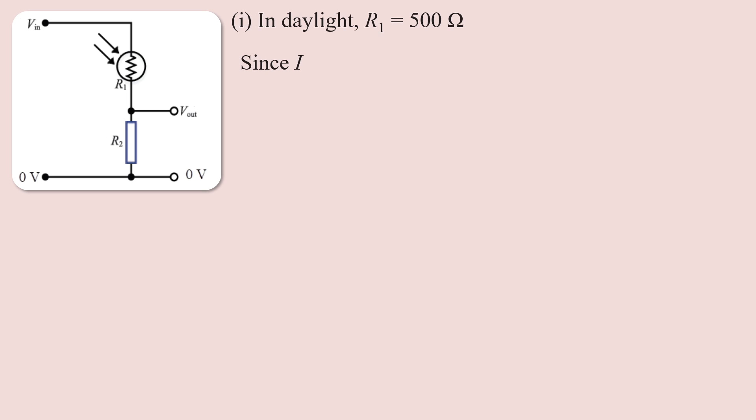The current I is equal to V_in divided by R1 plus R2. The voltage across R2 equals V_in multiplied by R2 divided by R1 plus R2.